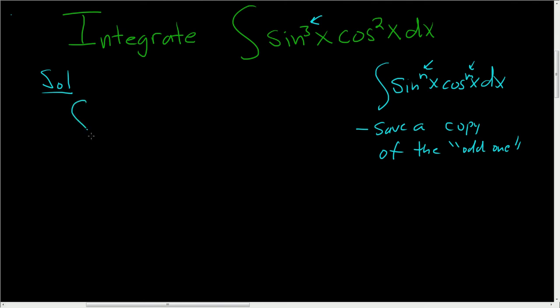Let's rewrite this as sin²x cos²x sin x dx. When you do that, if you remember this step to save a copy, you let u be the other function. We saved a copy of sine, so u will be cosine.